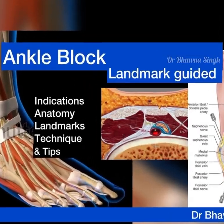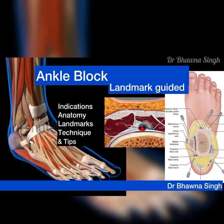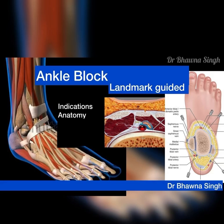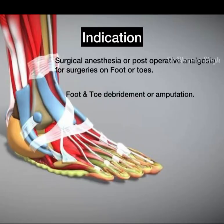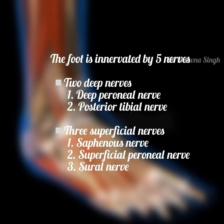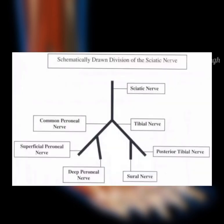Hello everyone. Today in this video I'm going to explain how to give an ankle block — indications, anatomy, landmarks, and technique. The indication is that it can be used as surgical anesthesia or post-operative analgesia for surgeries on the foot. The foot is innervated by five nerves: two deep and three superficial, and all of these nerves are branches of the sciatic nerve.